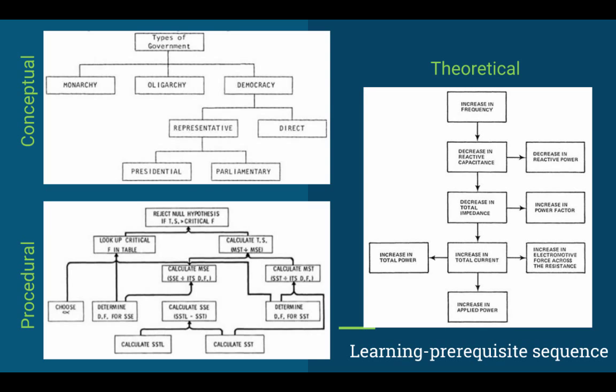These knowledge structures play an important role in the elaboration theory because it plays into the second key component of the elaboration theory, the learning prerequisite sequence. A learning structure or knowledge structure, the three that are on the screen, show the prior knowledge that is required to learn a new concept. Each knowledge structure above has critical components or prior knowledge that must be present in the learner before new concepts can be learned. Therefore, these three structures include and identify the prior knowledge that is necessary for the learning to be effective.